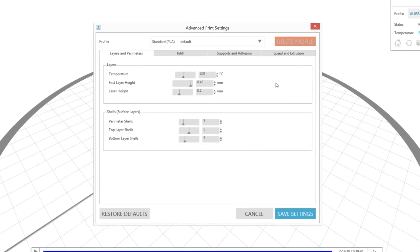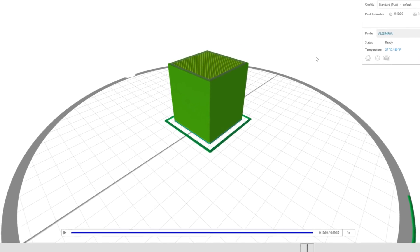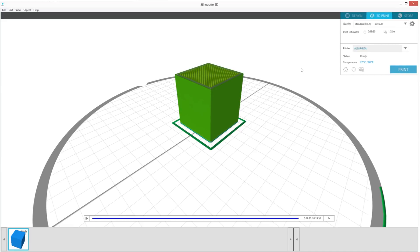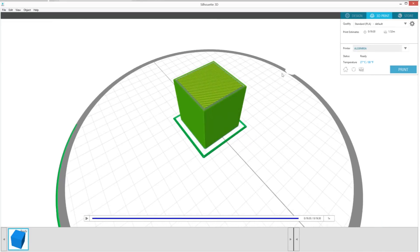The Silhouette 3D software will then slice or prepare your object for 3D printing. When your object is ready, you will see a rendered preview of each filament layer that will be printed.